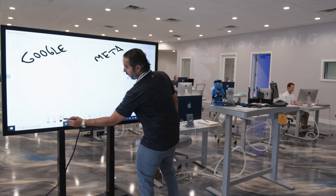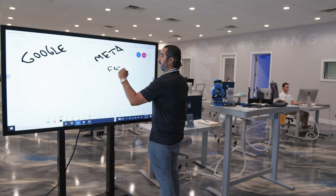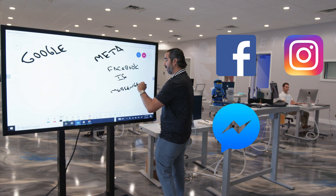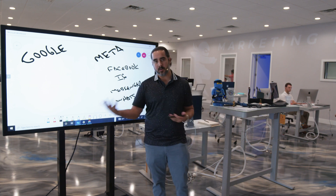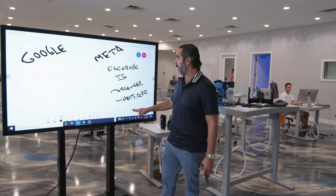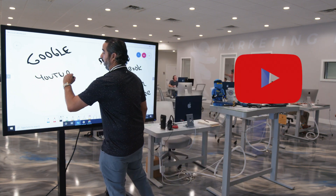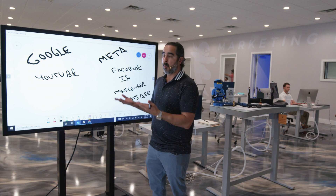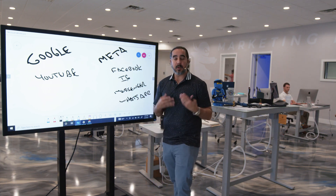The Meta world includes Facebook, Instagram, Messenger, WhatsApp, and other platforms like Oculus and virtual reality that are just scratching the surface. Google has YouTube and all the other Google properties — it's a pretty massive ecosystem. Both of these platforms are extremely powerful.